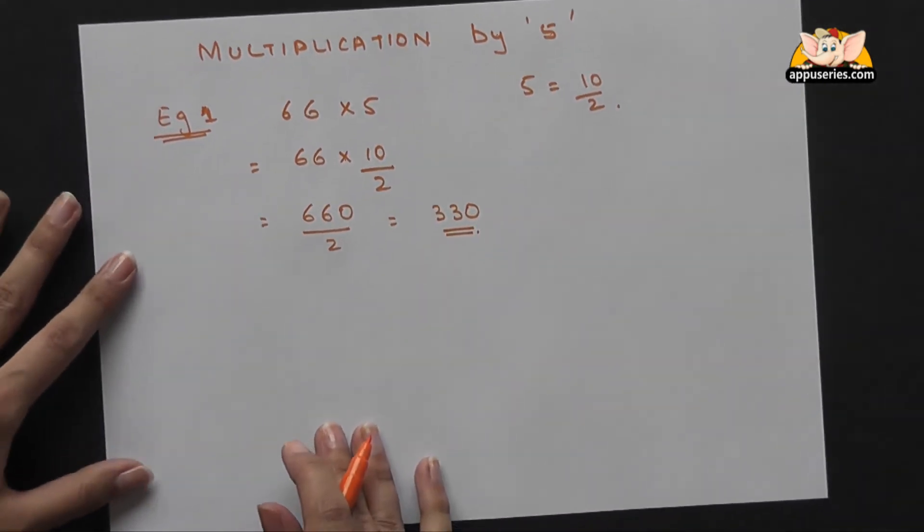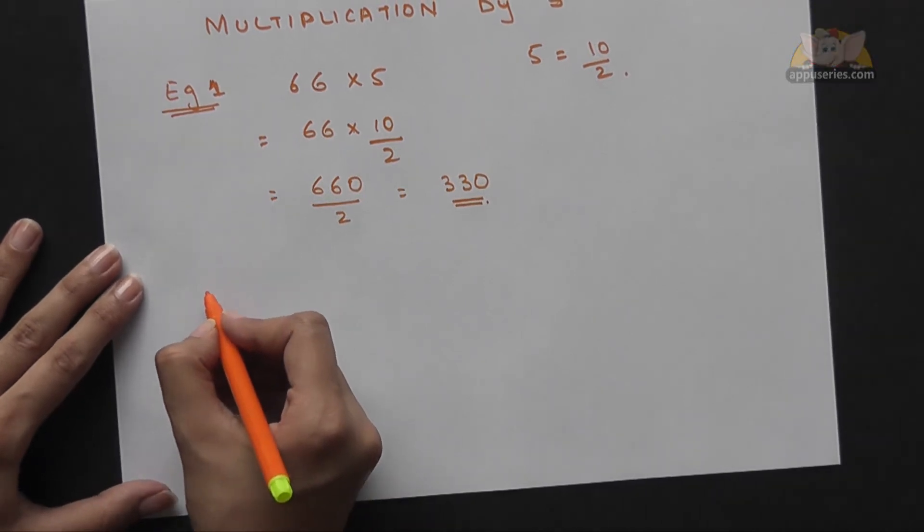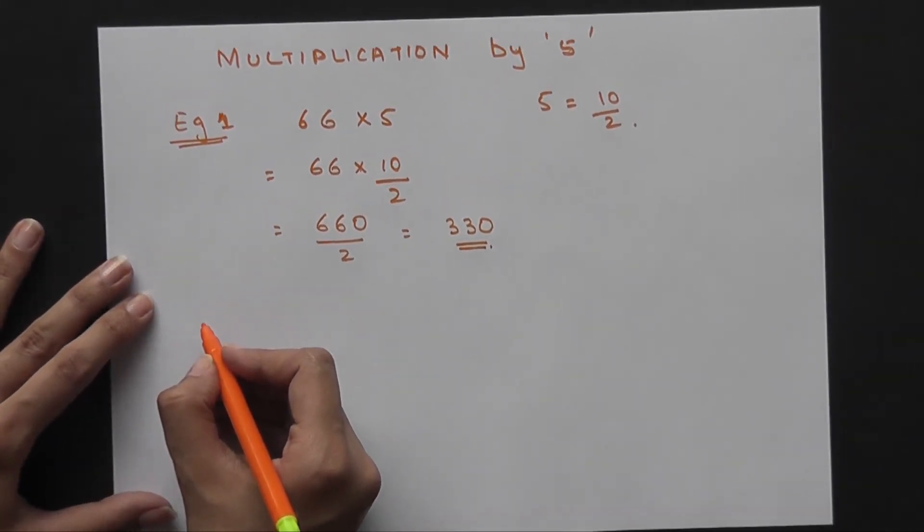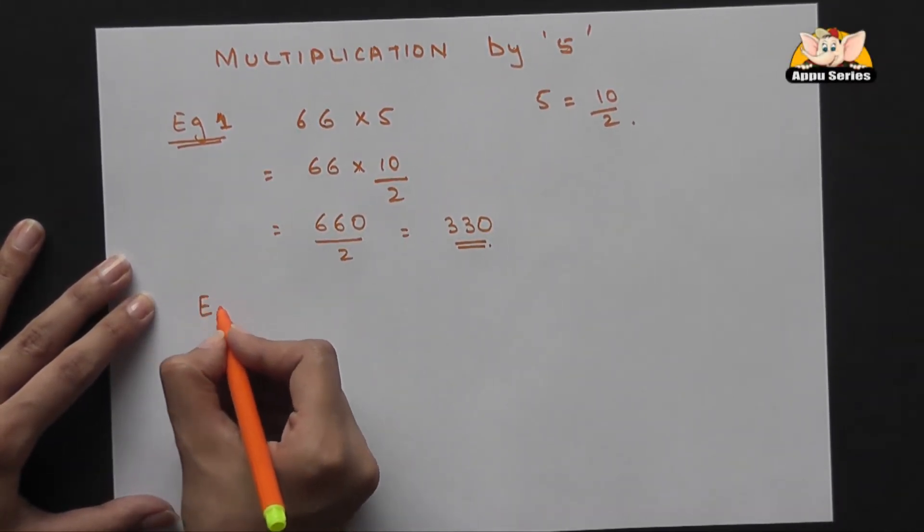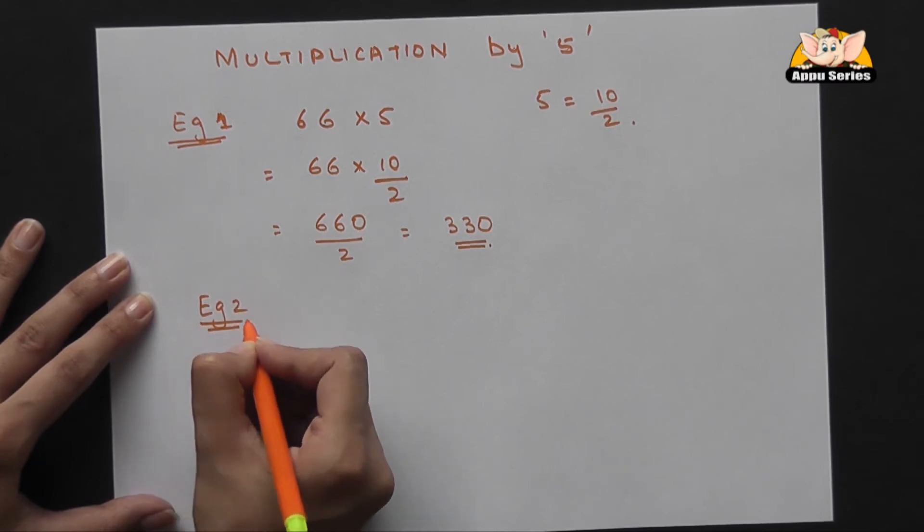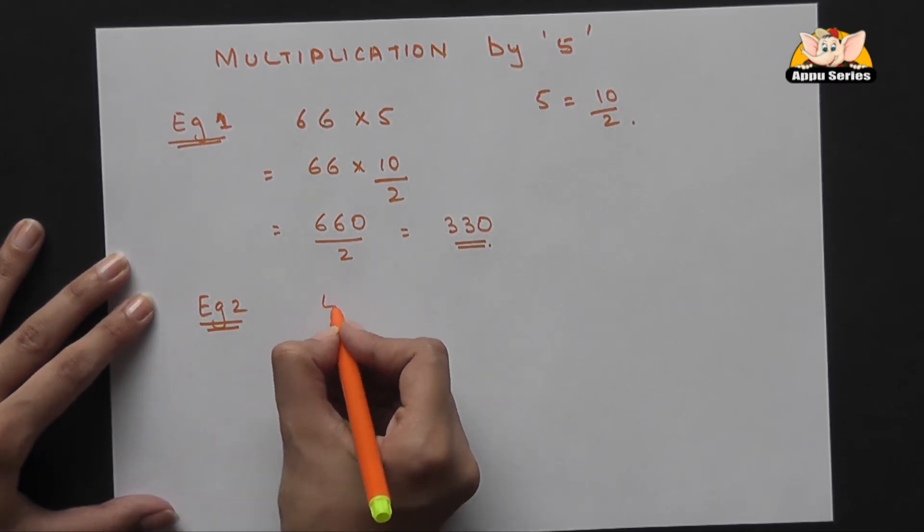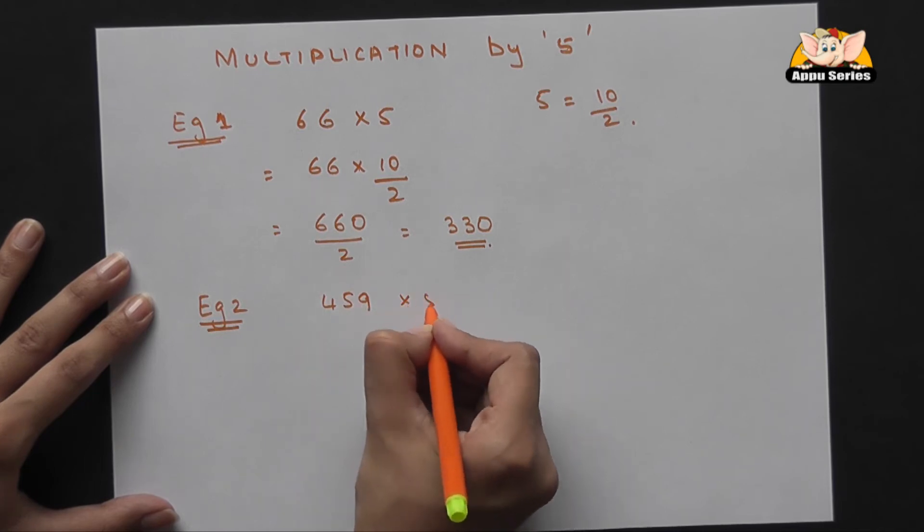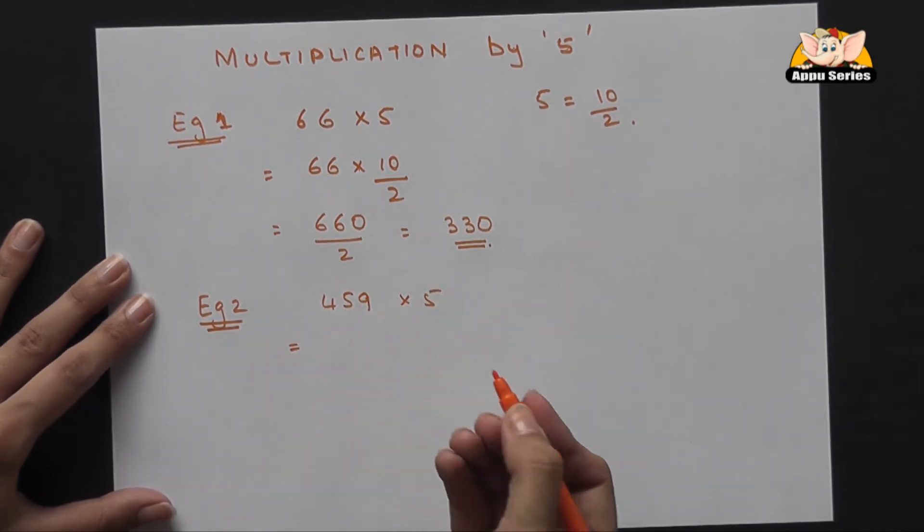It's a very quick method and it's easier for bigger numbers. We'll take a different example, say 459 into 5. Now this would take a really long time otherwise, but with this method it's going to be super fast.